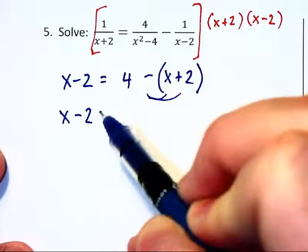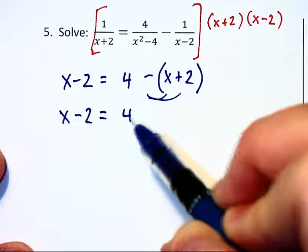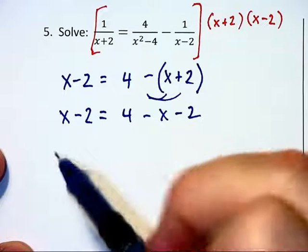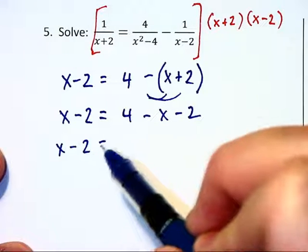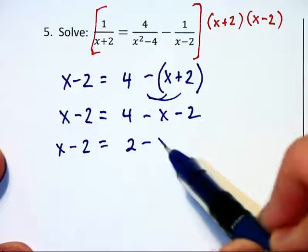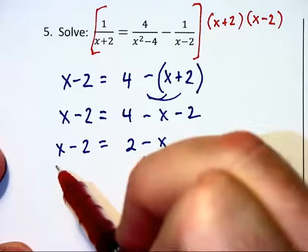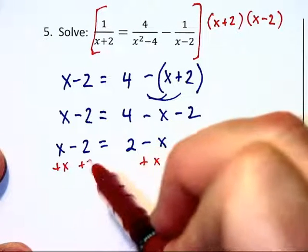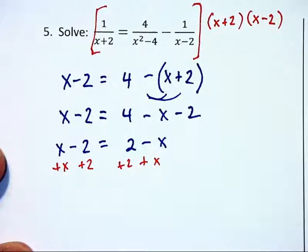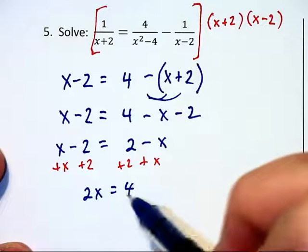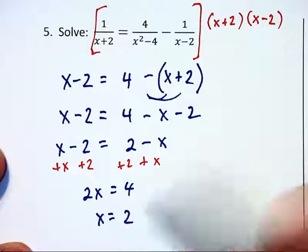This gives us an equation of x minus 2 is equal to 4 minus x minus 2, and then we have x minus 2 is equal to 2 minus x. Let's add x to each side, and while I'm at it, I'm going to add 2 to each side. Now we have 2x equals 4, and therefore x equals 2.